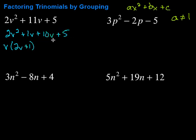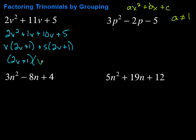So we have two V plus one. In this second pair of two terms, we can take a five out, so this would be plus five times two V plus one. Now notice — we have two V plus one in both groups. So I'm going to pull that out to the front, giving me two V plus one, and then what's left: V plus five. You can always double check by FOILing back — two V times V is two V squared, two V times five is ten V, one times V is one V, ten V plus one V is eleven V, and one times five is five. Correct!